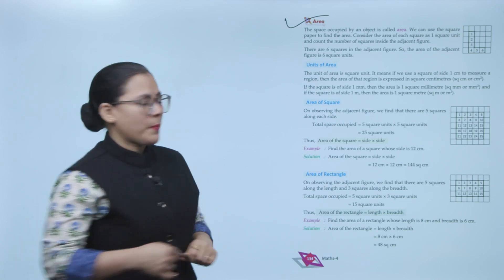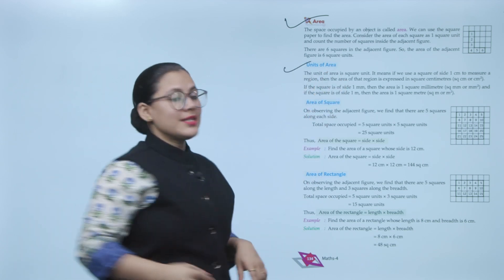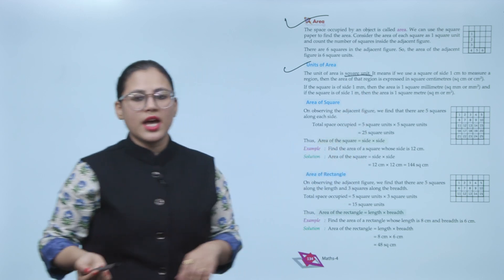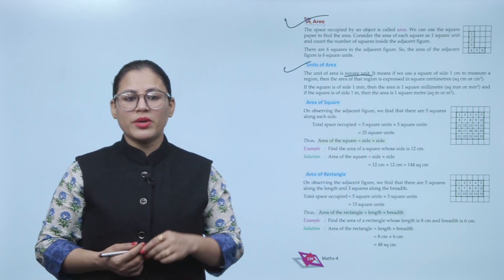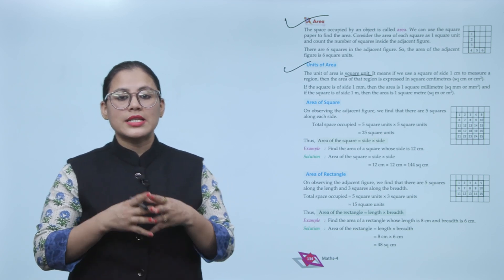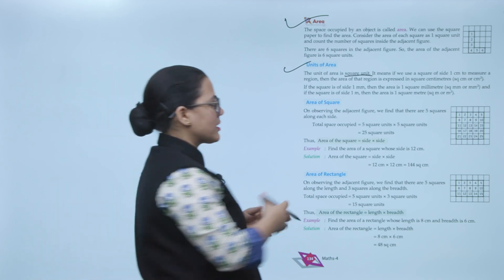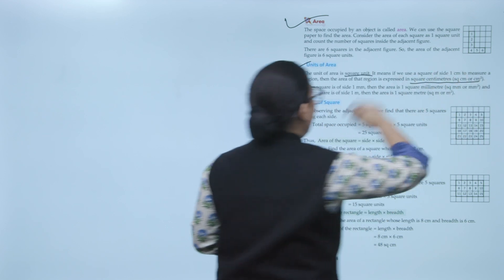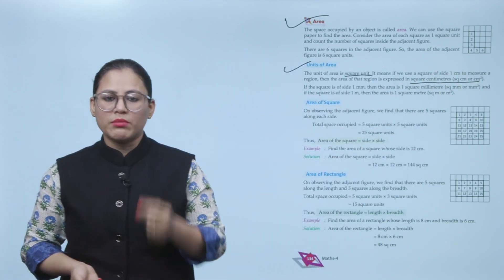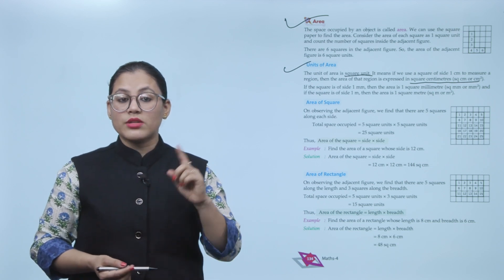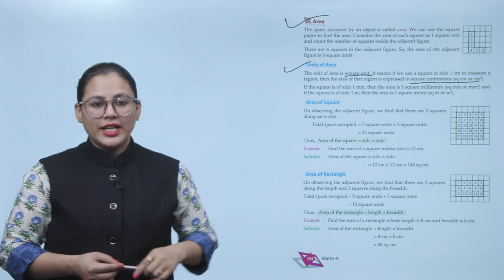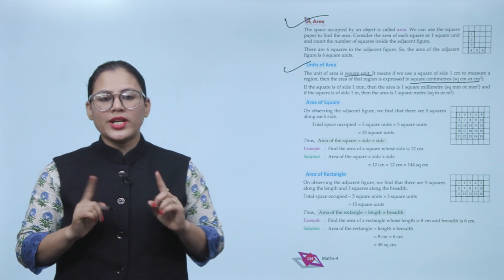Units of area: the unit of area is square unit. If we use a square of side 1 centimeter to measure a region, the area is expressed in square centimeters. If the square has a side of 1 millimeter, the area is 1 square millimeter. If the side is 1 meter, the area is 1 square meter.